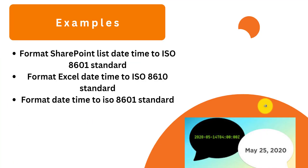We will see three examples. First, how to format SharePoint list date and time to ISO 8601 standard. Then, how to format Excel date and time to ISO 8601 standard. And finally, how to format date and time to ISO 8601 standard using a manually triggered flow, where we take the date and time as user input.